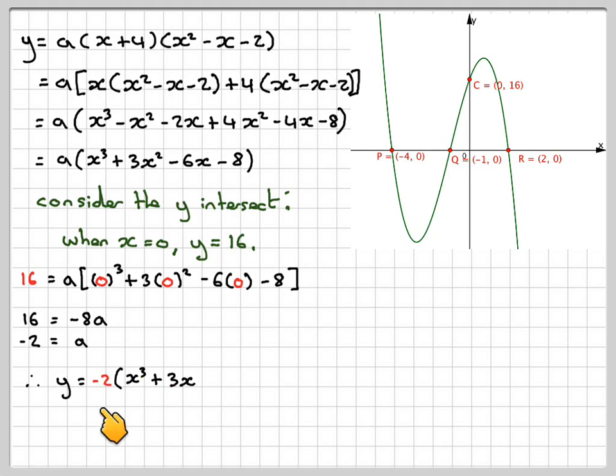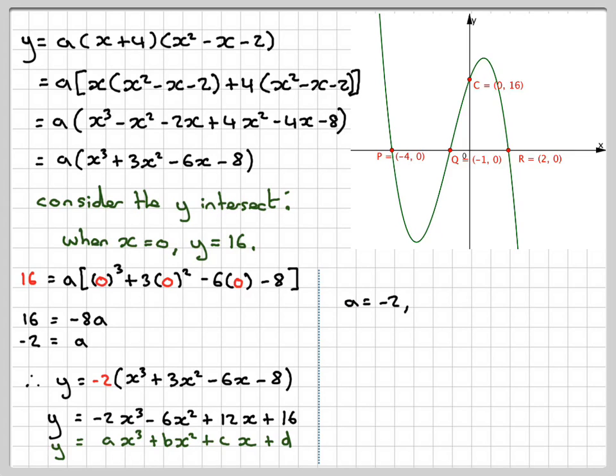Therefore, y will be equal to minus 2 times all of this. So expanding this, we're going to get minus 2x cubed, minus 6x squared, minus times the minus gives plus 12x, and minus times the minus 8 gives a plus 16. Now it's in the format y equals ax cubed plus bx squared plus cx plus d. So a is minus 2, b is minus 6, c is equal to plus 12, and d is equal to 16. So we found the values of a, b, c, and d.